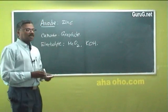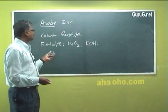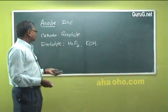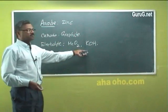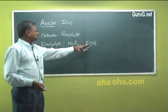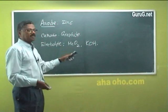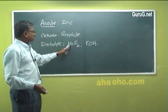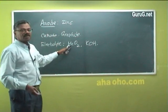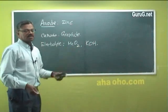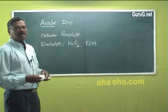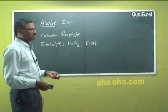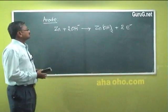In an alkaline battery we use zinc as anode, graphite as cathode, and the electrolyte is potassium hydroxide. We replace ammonium chloride with potassium hydroxide. Now let us see the anode reaction and cathode reaction in an alkaline battery.